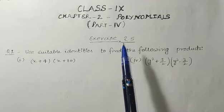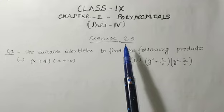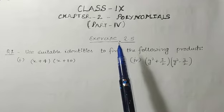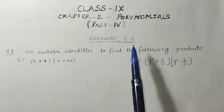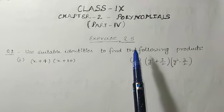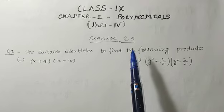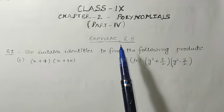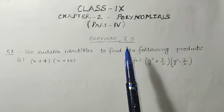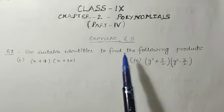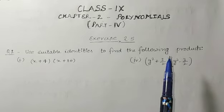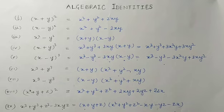As I mentioned in part 1, exercise 2.5 is based on algebraic identities, and I gave you homework to learn all the algebraic identities. So before starting the exercise, let us revise the algebraic identities once again. These are the identities which we will use in exercise 2.5 as formulas.